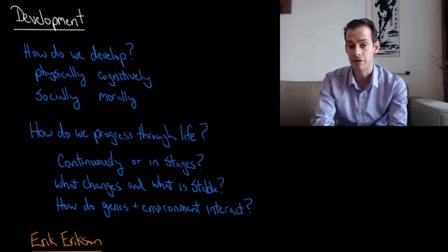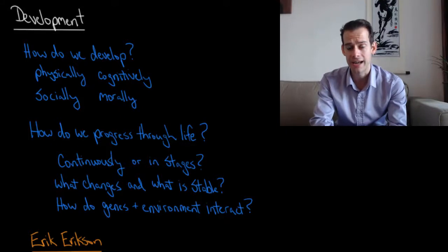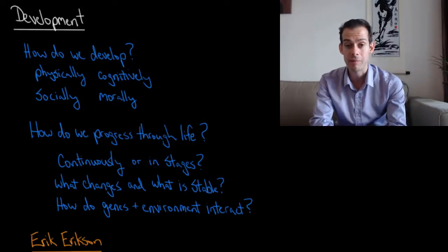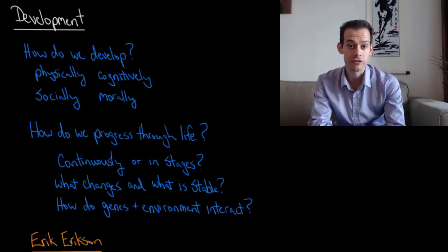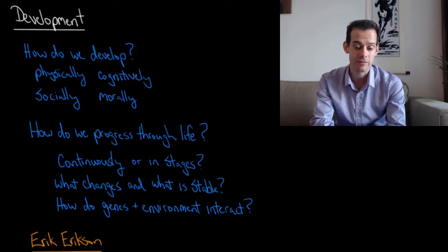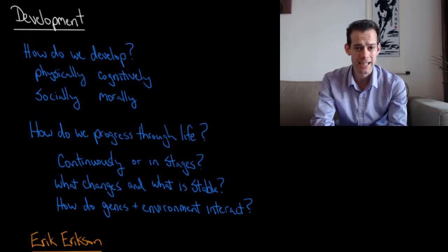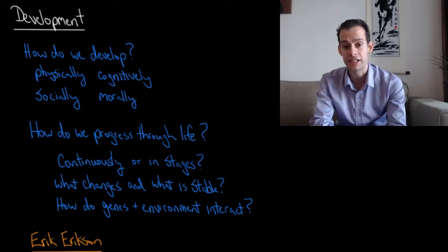In doing this we're going to consider development physically, cognitively, socially, and morally. Essentially we're asking the question: how is it that we progress through life? In looking at this we're going to see some repeated themes, including asking whether our development occurs continuously or if it happens in stages, thinking about which things change over time and which things have a tendency to remain stable, and lastly, a question we've asked throughout this course: how is it that genes and environment interact in shaping our development?